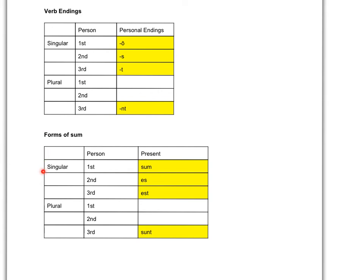This chart deals with the forms of SUM, because SUM is an irregular verb. Again, the top three rows deal with singular forms of SUM in the first, second, and third person: sum, es, est — I am, you are, someone is. The bottom of the chart deals with the plural forms of SUM. We haven't learned all of them, but we have learned that sunt means "are," as in "they are" or "the old men are." And that's all for the forms of SUM.